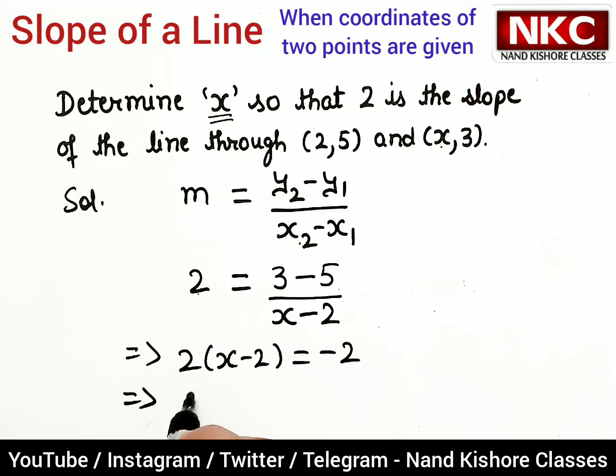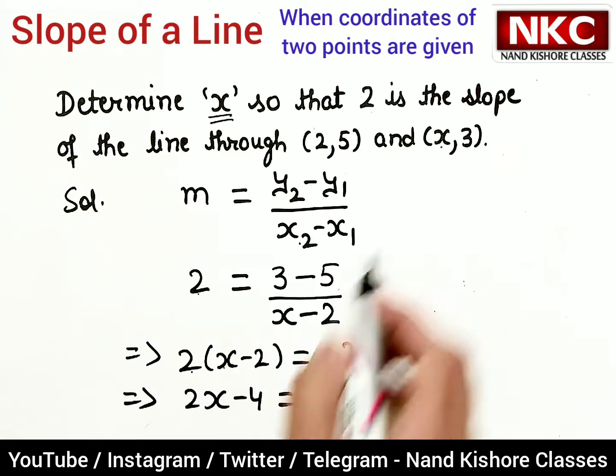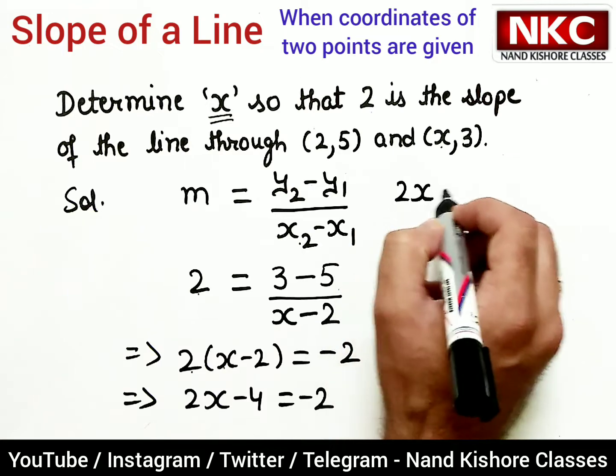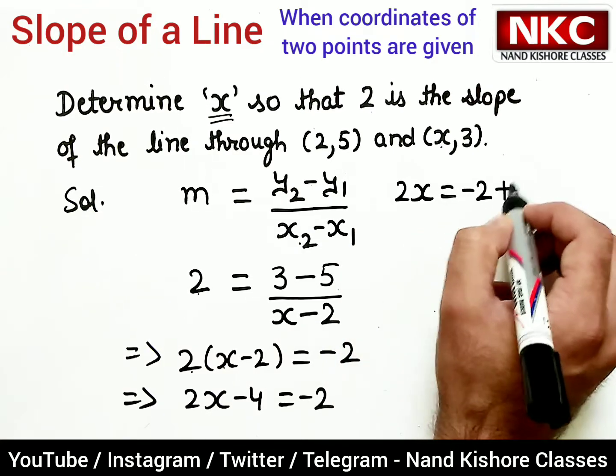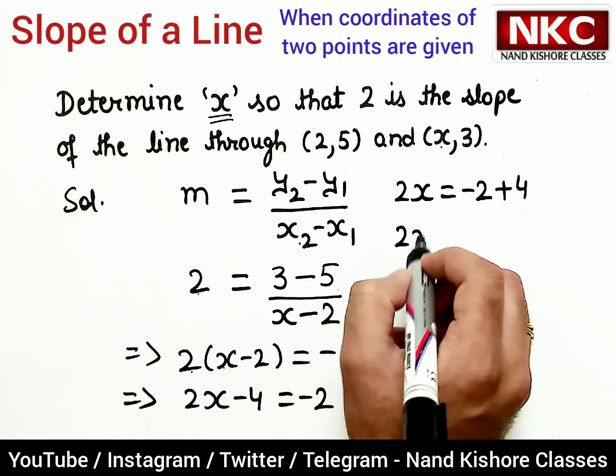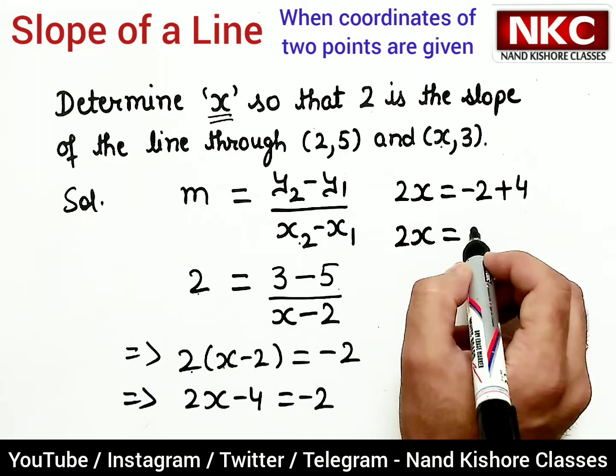I have opened the bracket—2 is multiplied with both the terms. Then 2x equals minus 2 plus 4. Minus 2 plus 4 is 2.